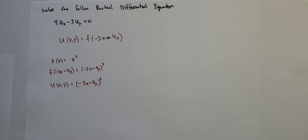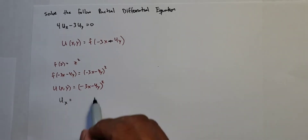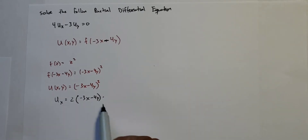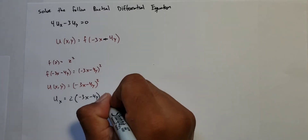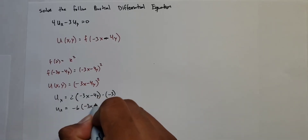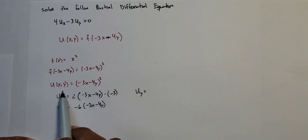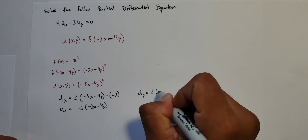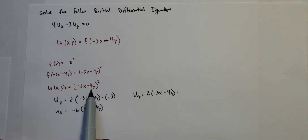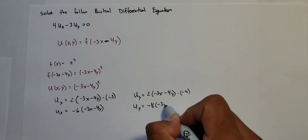You can verify it by taking the partial derivative with respect to x and with respect to y and plugging those in. Using the chain rule, the partial derivative with respect to x gives us 2(−3x − 4y) times −3, so u_x = −6(−3x − 4y). For u_y, chain rule again: 2(−3x − 4y) times −4, so u_y = −8(−3x − 4y).